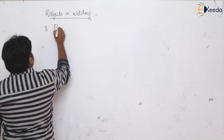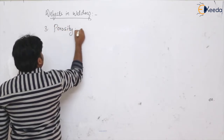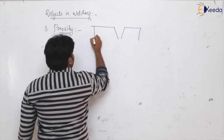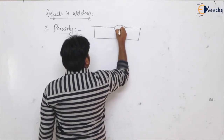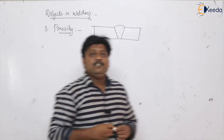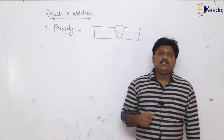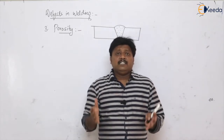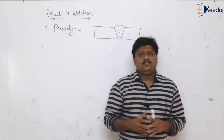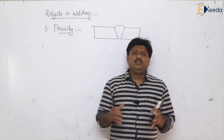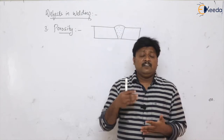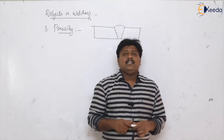The third defect is porosity. Porosity is the entrapment of gas into the weld — it is nothing but entrapped gases into the weld bead. There are many gases in the weld zone: hydrogen, oxygen, nitrogen, argon, and carbon dioxide.